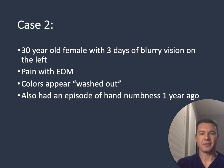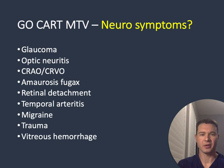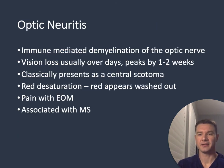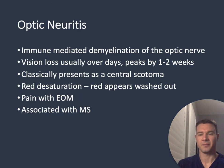Case 2 is a 30-year-old female with a three-day history of blurry vision on the left. She endorsed pain with extraocular movements and states that colors appear washed out. On further questioning, she reports an episode of hand numbness one year ago. Looking at GO-CART-MTV, two diagnoses are associated with neuro symptoms: optic neuritis and amaurosis fugax. This case is most consistent with optic neuritis — an immune-mediated demyelination of the optic nerve. Vision loss usually occurs over days and peaks by one to two weeks. It classically presents as a central scotoma with red desaturation, pain with extraocular movements, and is highly associated with MS, being the presenting feature in 15-20% of patients.